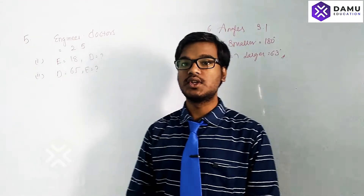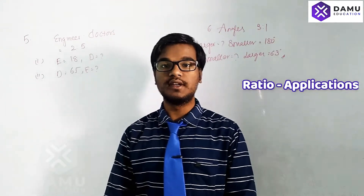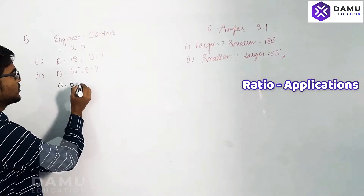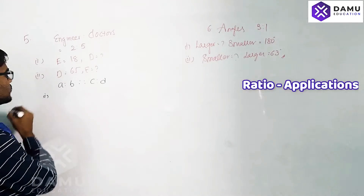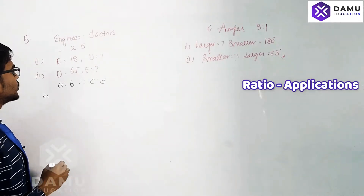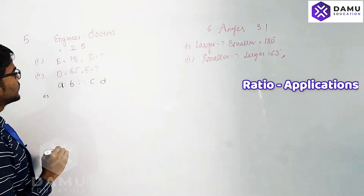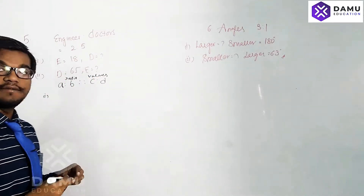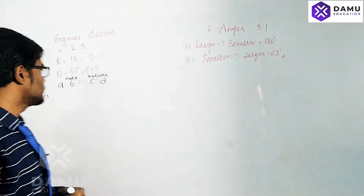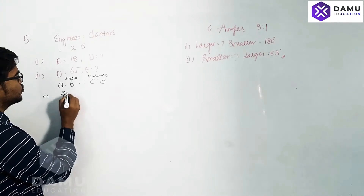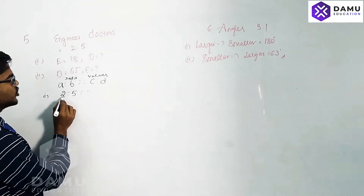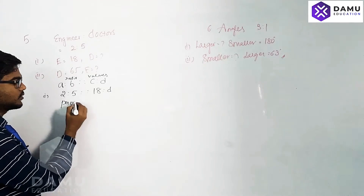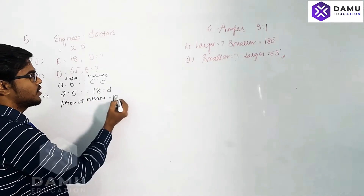First I'll solve using the proportionate method, then we'll go for the usual method. For doctors to engineers, we use the proportion A is to B as C is to D. On the left side we take the ratio, and on the right side we take the actual values. Engineers is A, so 2 is to 5 as the number of engineers is to T. Product of means equals product of extremes.